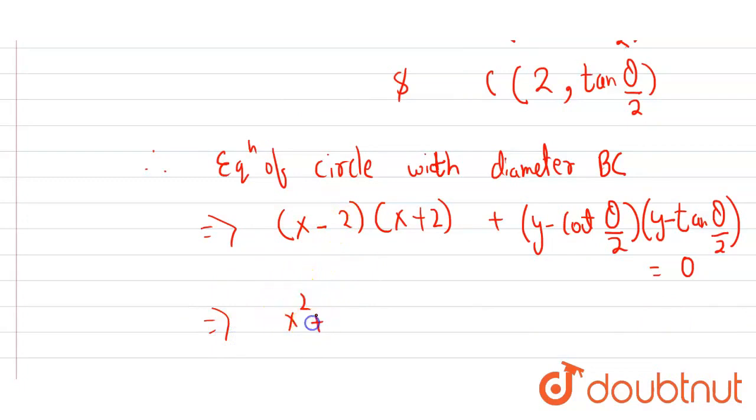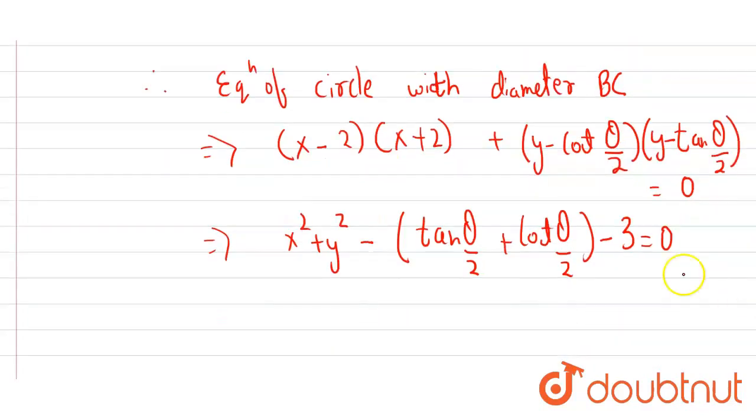Therefore, the equation will be x square plus y square minus tan theta upon 2 plus cot theta upon 2 minus 3 equals to 0. Therefore at y equals to 0, x is equals to plus minus under root 3.